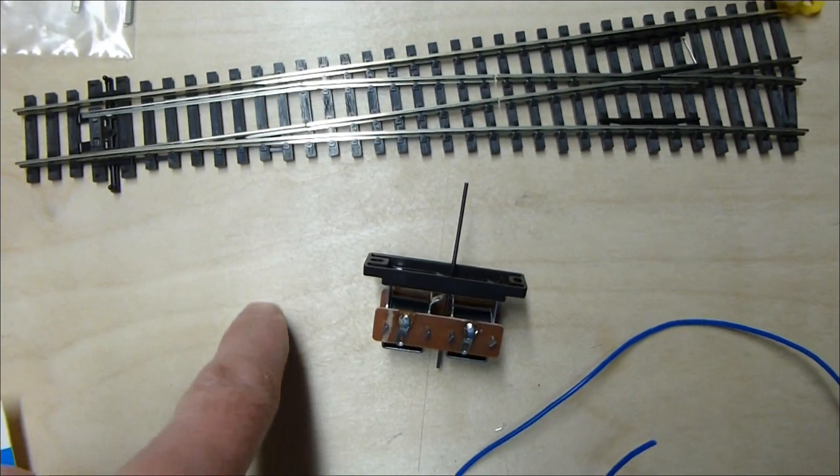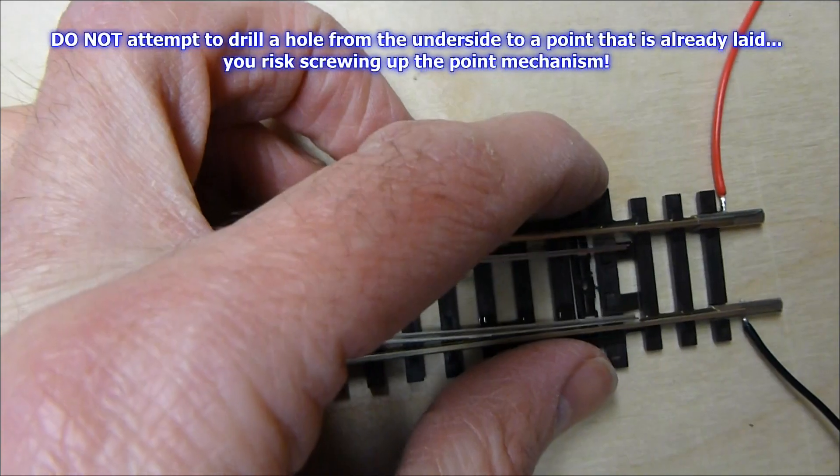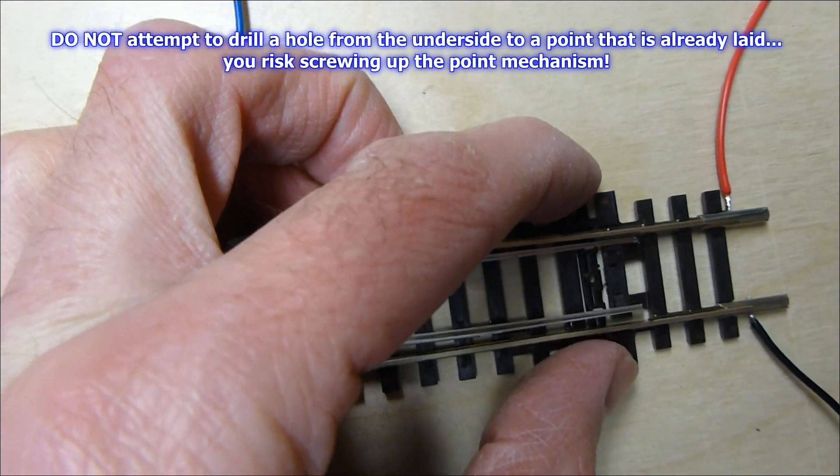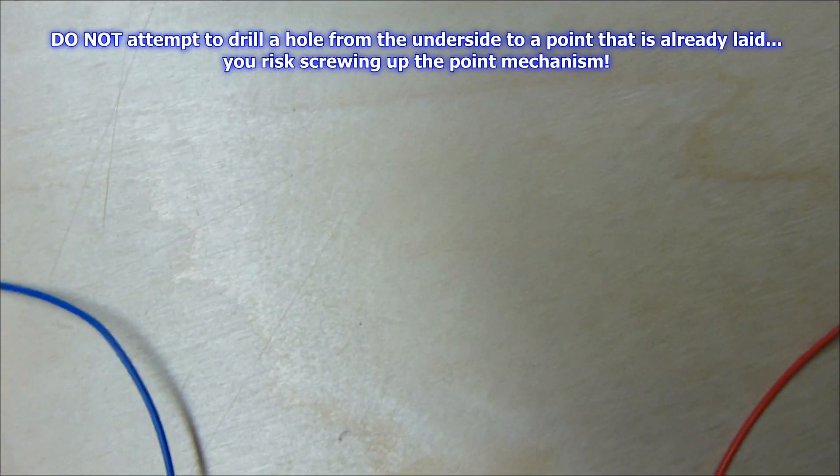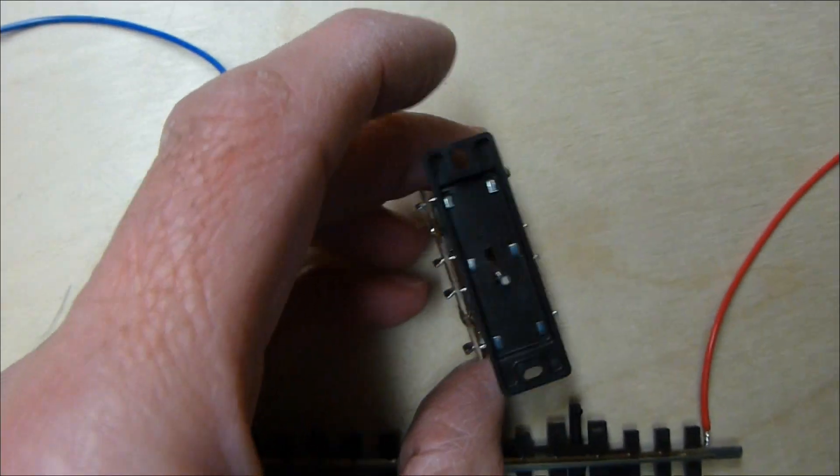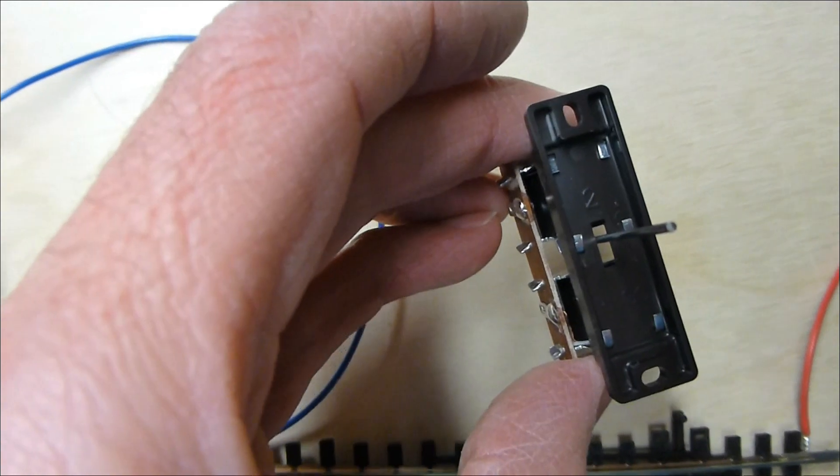I drill a 10mm, 10.5mm hole underneath where this is going to be. I set it at the mid position, hold it in place with a couple thin bits of card. I put a pencil mark, remove it, drill the hole, and then when I line the motor underneath, I make sure that there's free movement before I start screwing or putting anything in place.